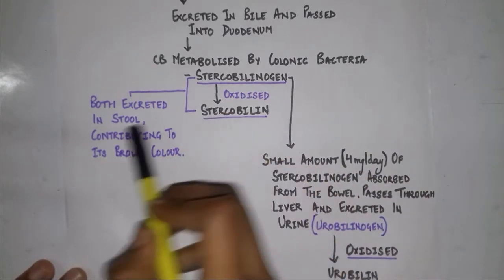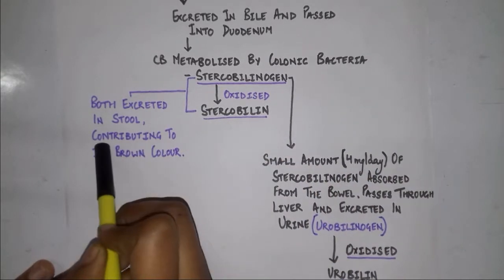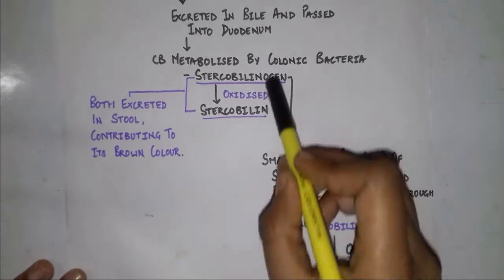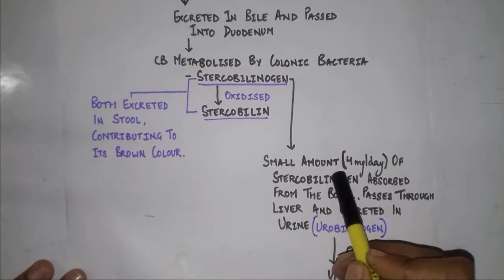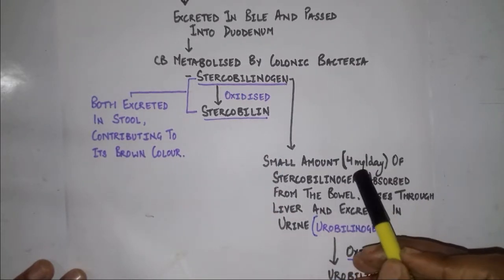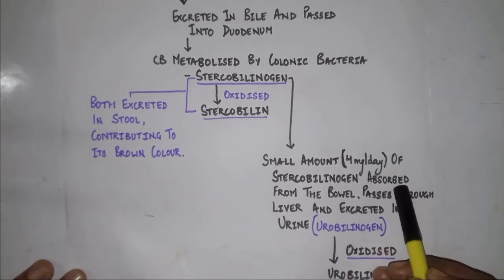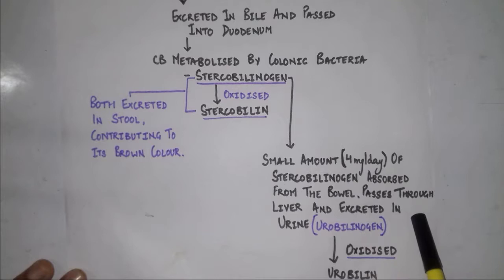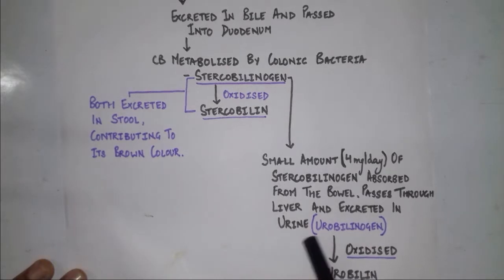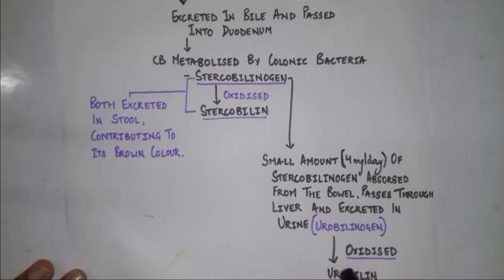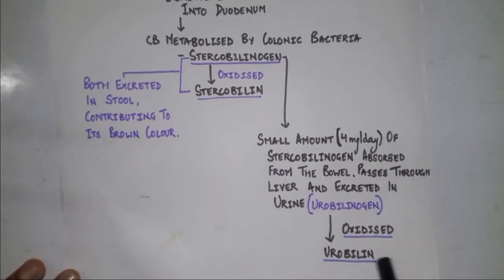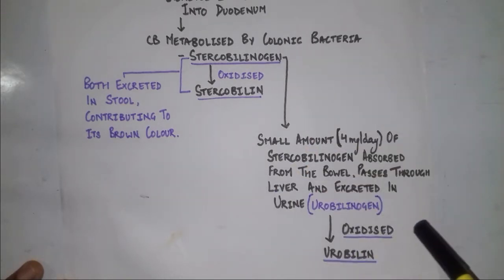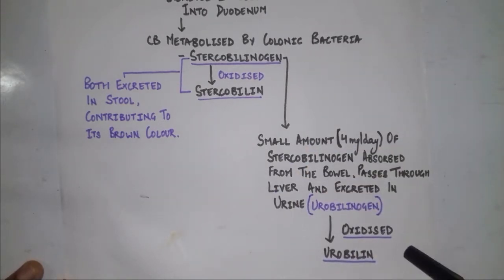Stercobilinogen and stercobilin are excreted in the stool, contributing to its brown color. A small amount of stercobilinogen — about 4 mg per day — is absorbed from the bowel, passes through the liver, and is excreted in the urine as urobilinogen. Urobilinogen is further oxidized to form urobilin, completing the metabolism of bilirubin.